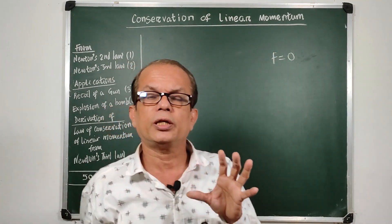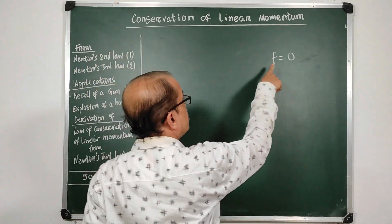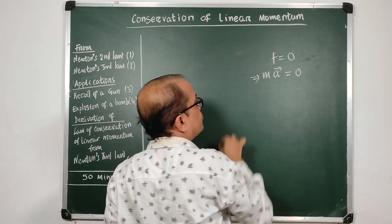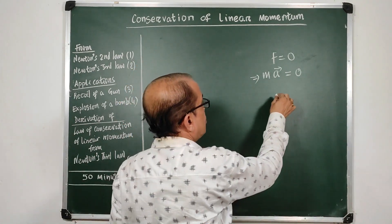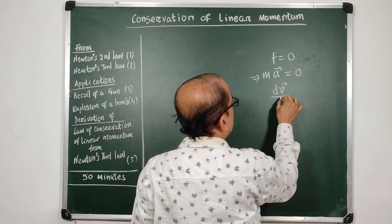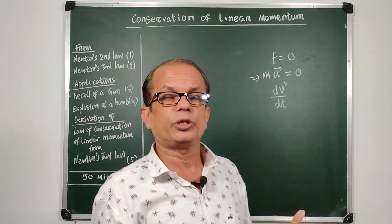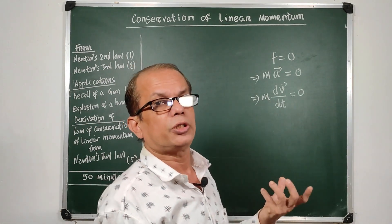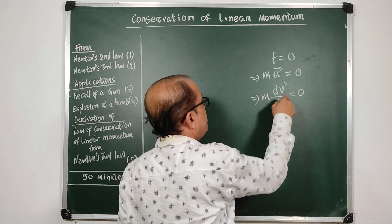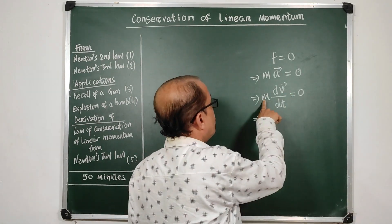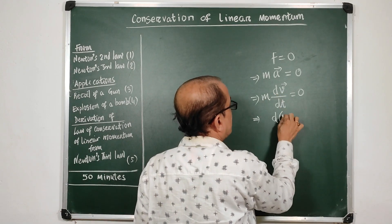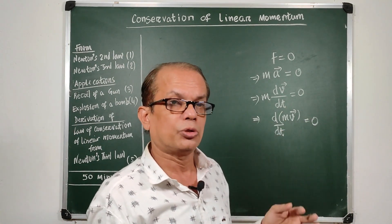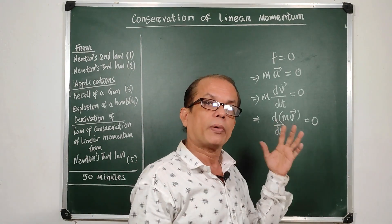If the system is isolated, the force acting on it is zero. So if force is zero, then F = ma, meaning mass into acceleration should be equal to zero. Acceleration is nothing but dv/dt, the change in velocity with time. So m × dv/dt should be equal to zero. Since mass of a particle is constant throughout the motion, we can write this as d(mv)/dt = 0. Mass remains constant; the velocity changes but the mass does not change.